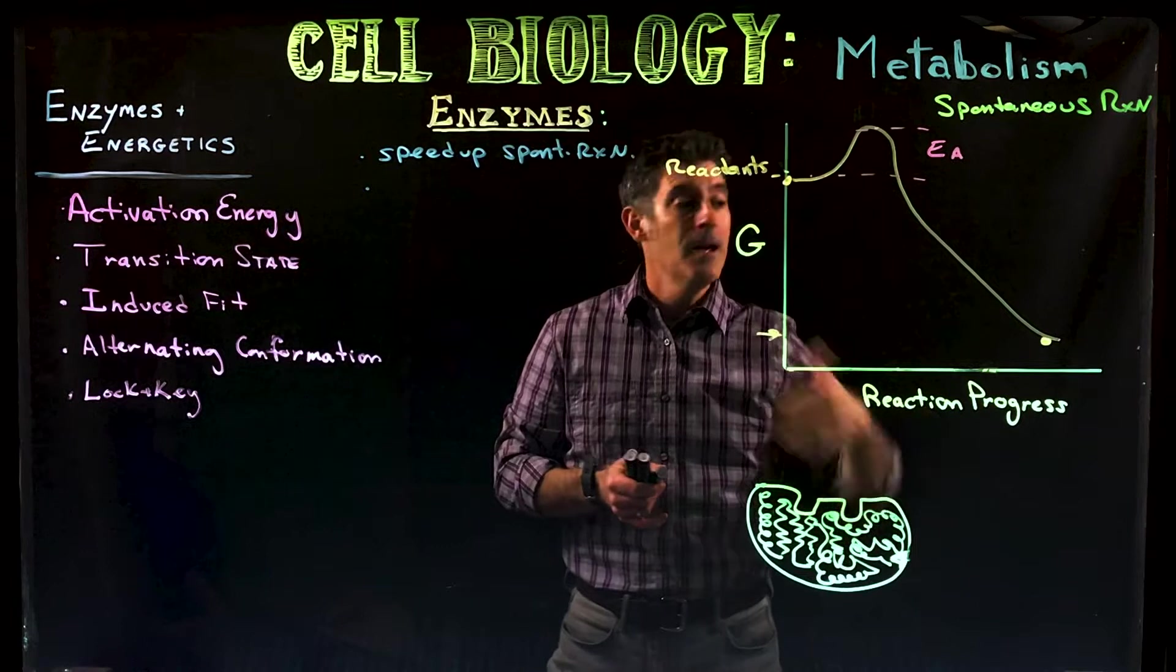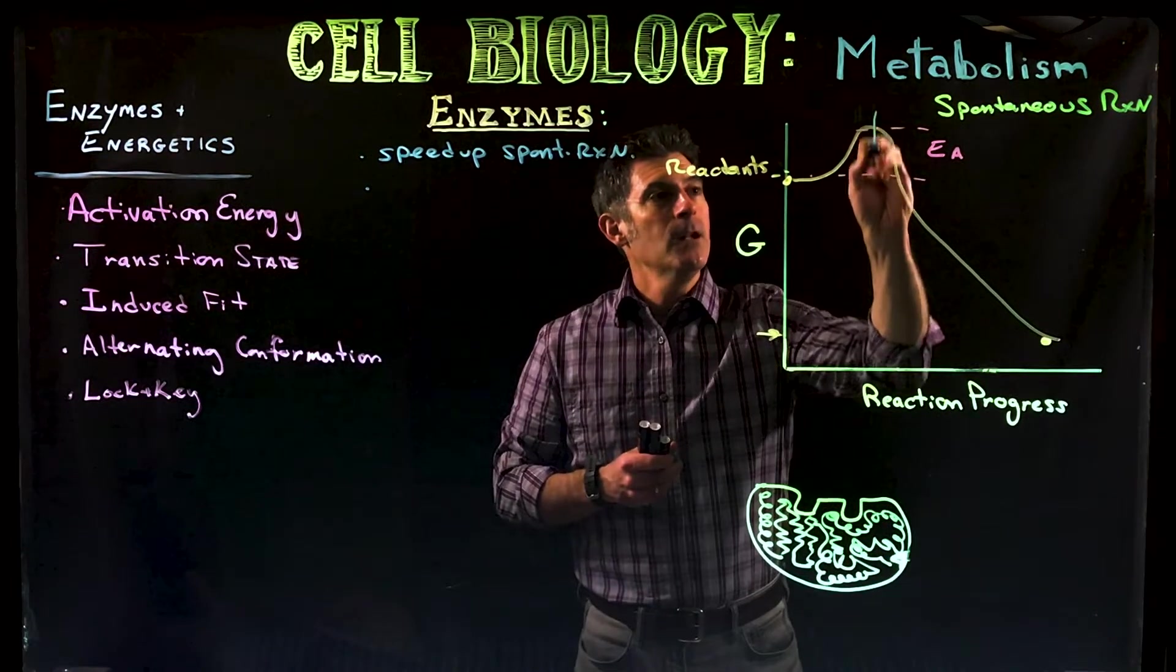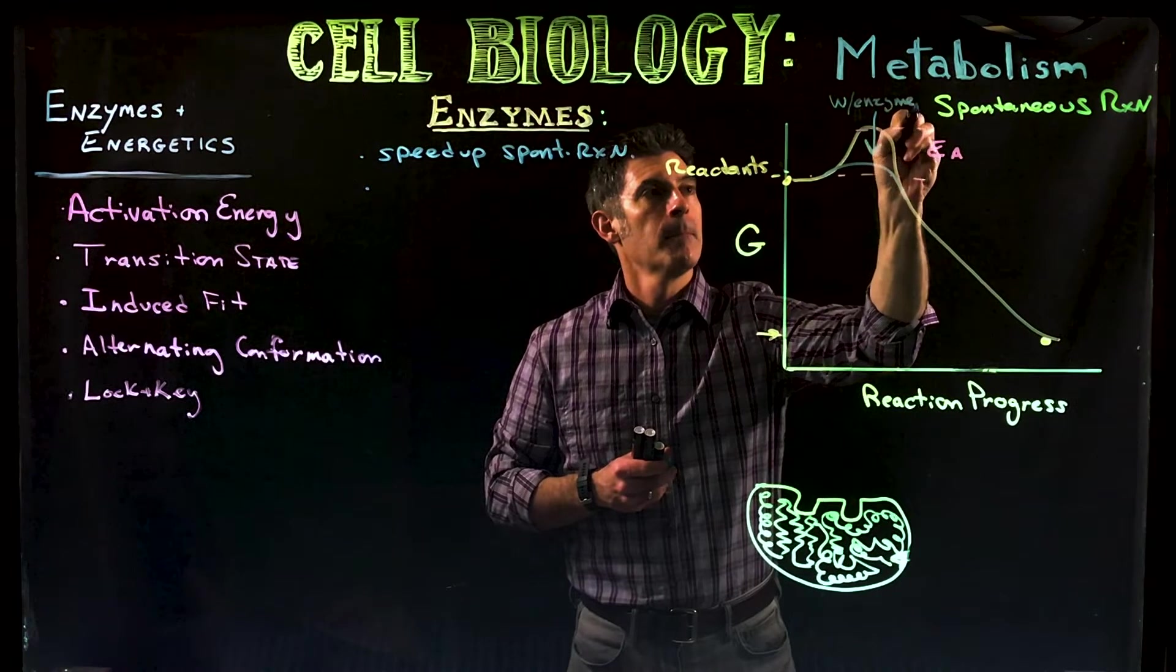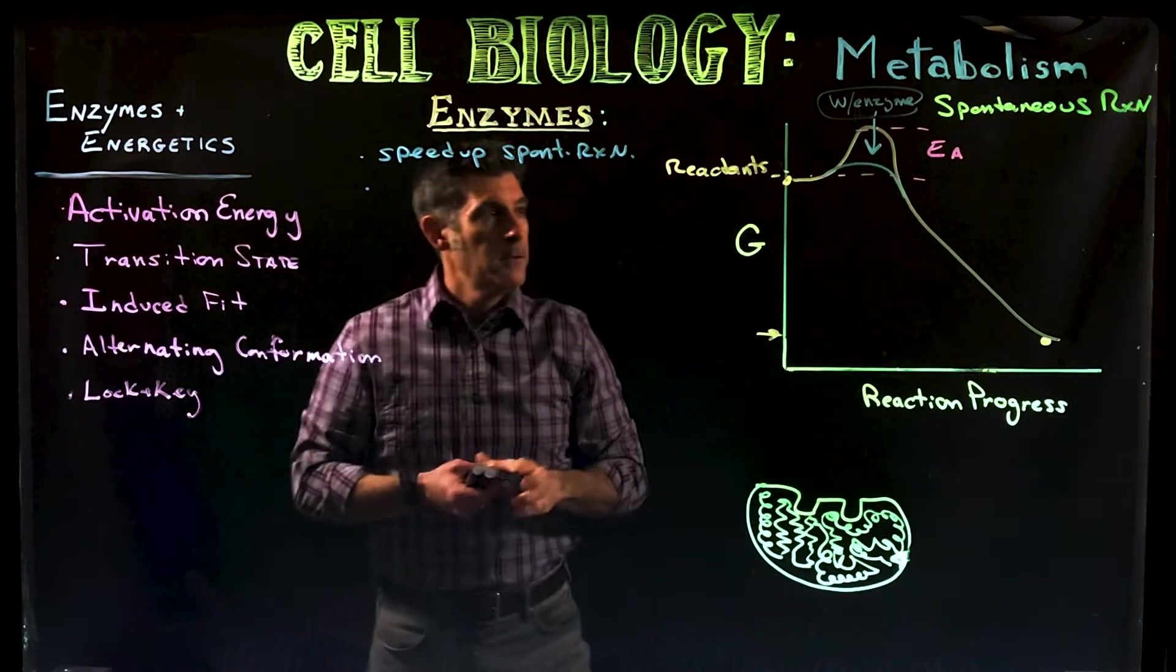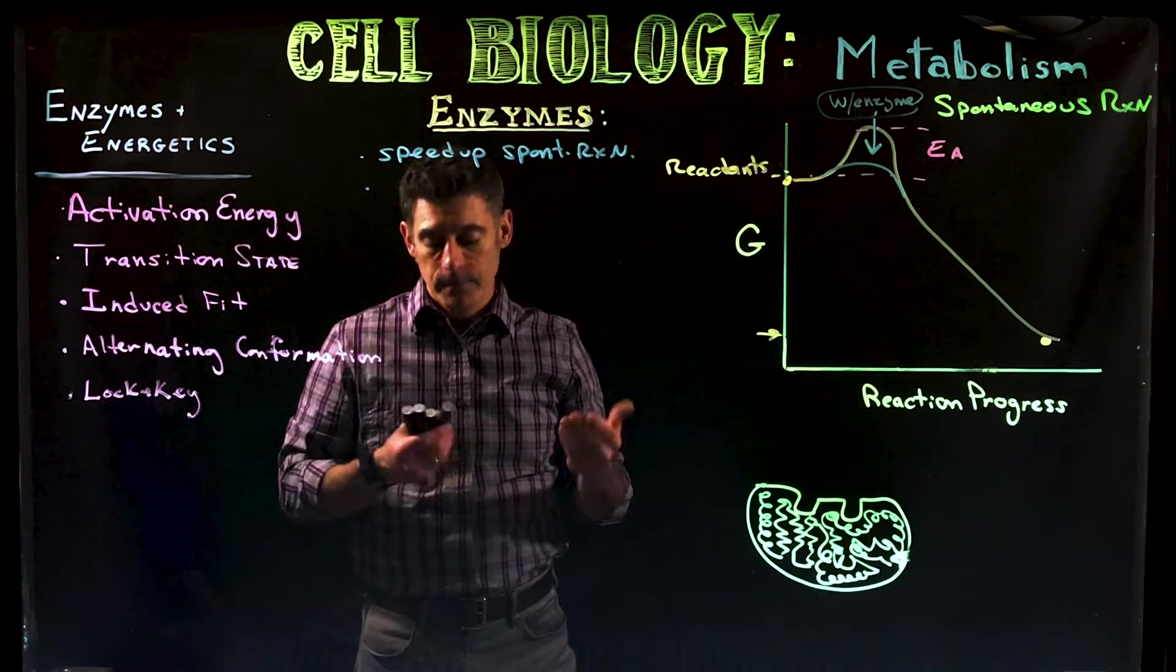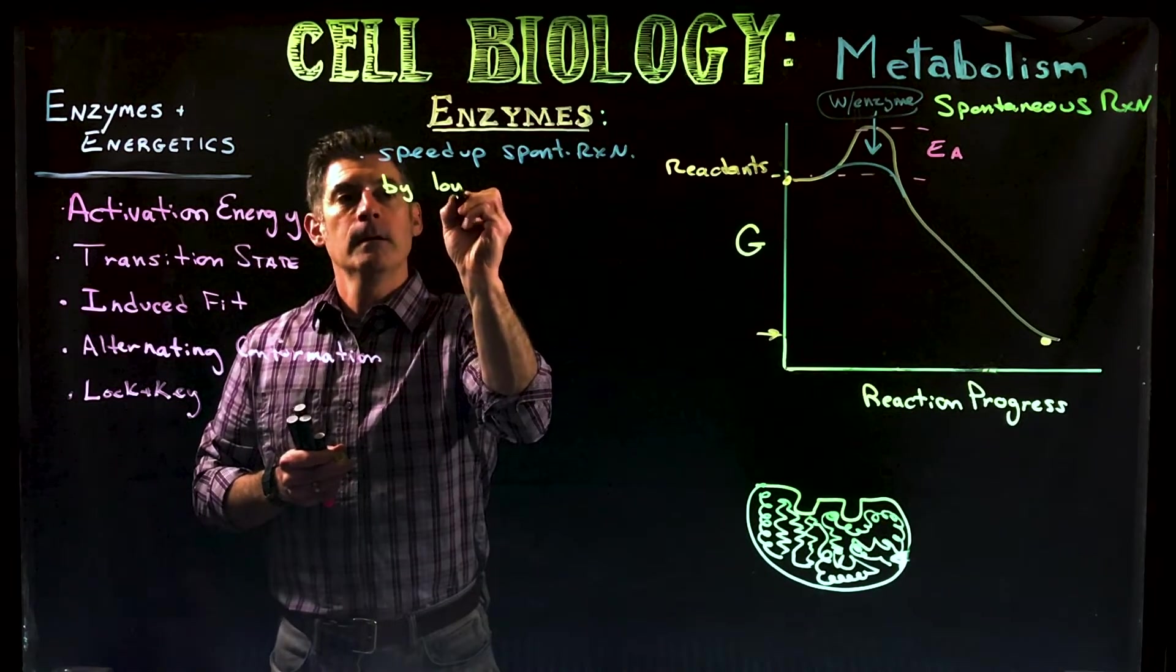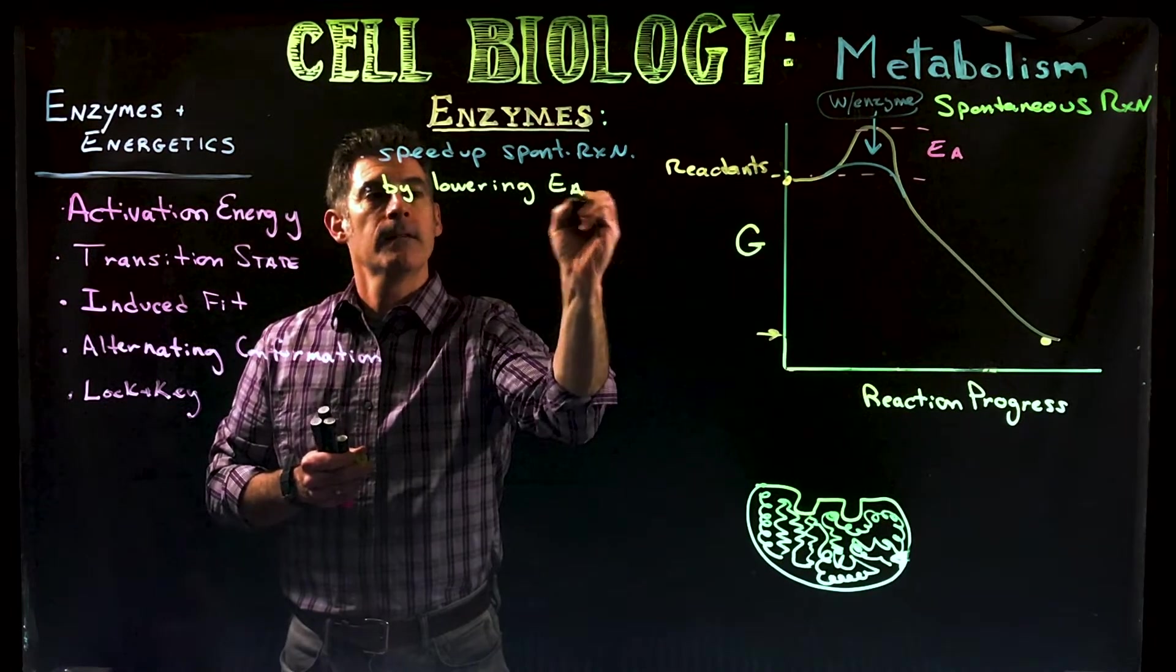So it's easy for the reaction to occur. So the enzyme is going to be lowering this activation. With an enzyme, the amount of activation energy required is going to be very little. So enzymes are going to speed up spontaneous reactions by lowering activation energy.